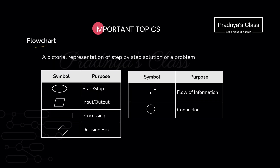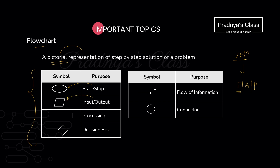Moving ahead to the next topic — flowchart. What is a flowchart? It is a pictorial representation of the solution. There are different ways to write the solution: one is to draw the flowchart, second is to write the algorithm, and the third is to write pseudo code. A flowchart uses symbols. The first step is always start and the last step is stop — for both we use the oval shape. To take input or display output, we use the parallelogram symbol.